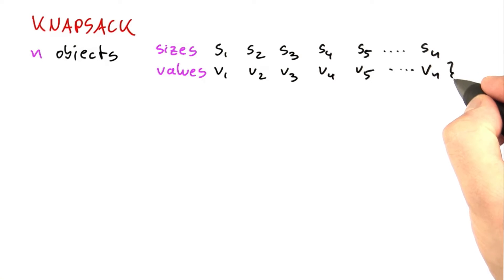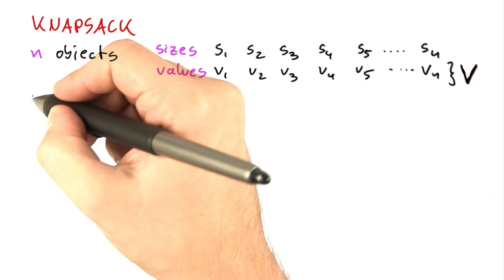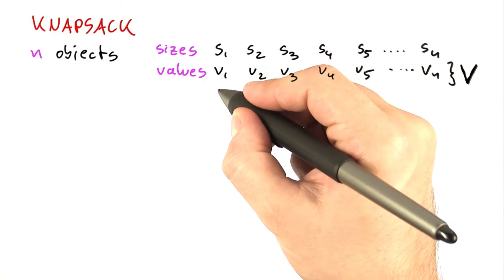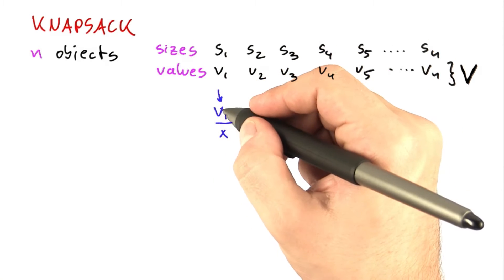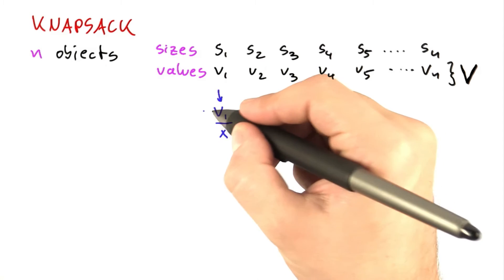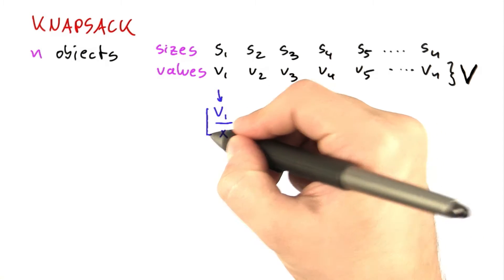And you know that the total sum of those values here we'll call v. So what we said now is that we wanted to scale down all of these values. So we'll scale this down to v1 over x and then round down.